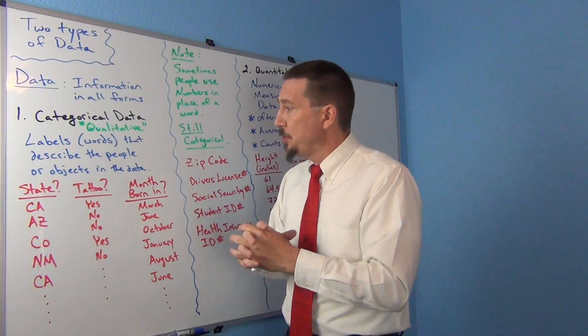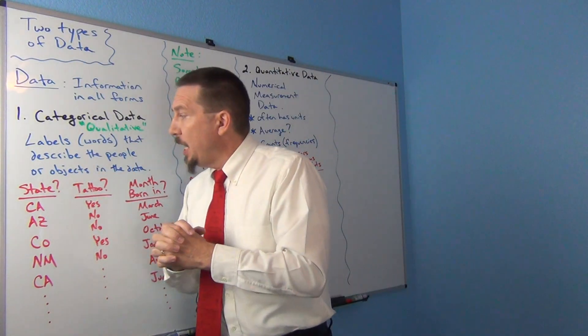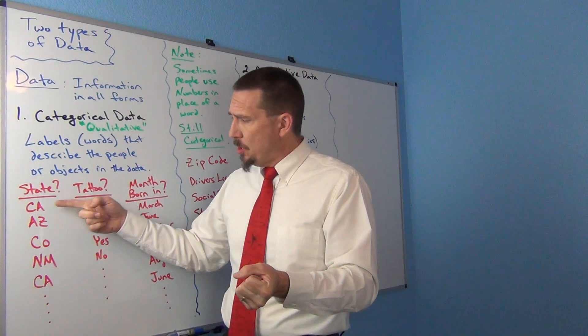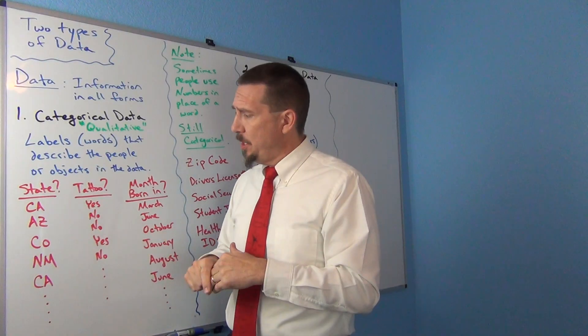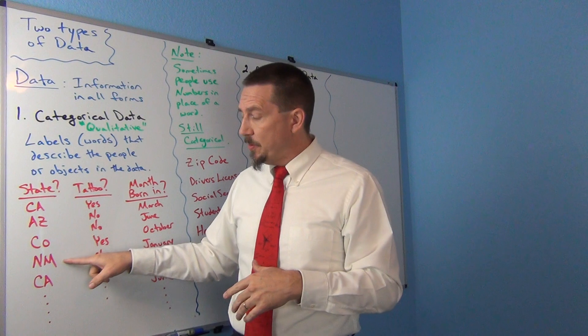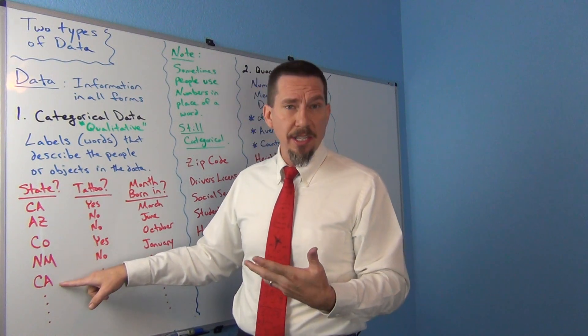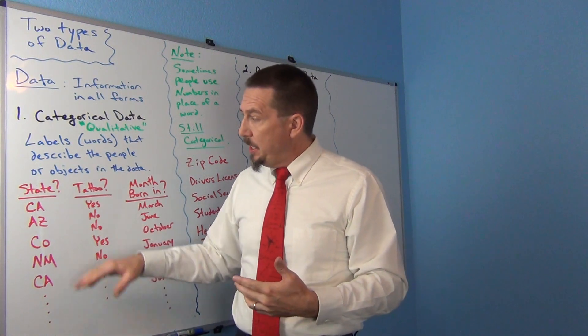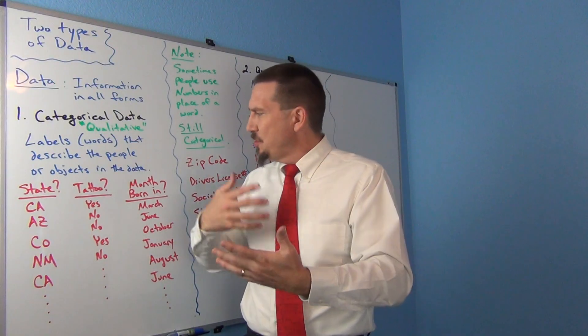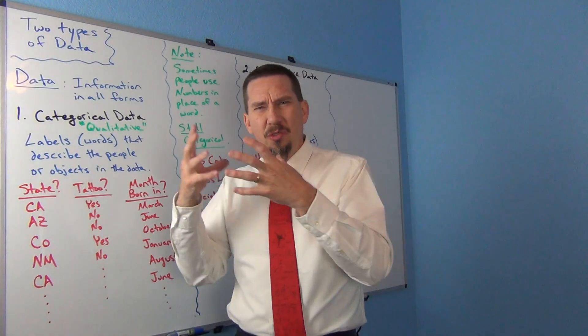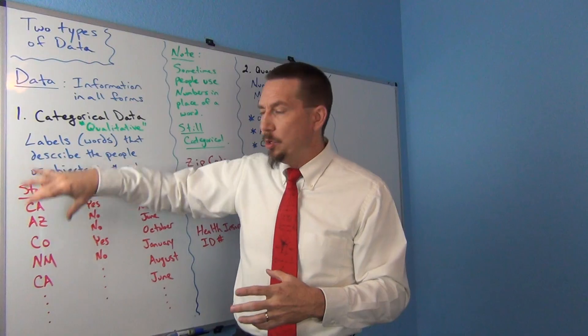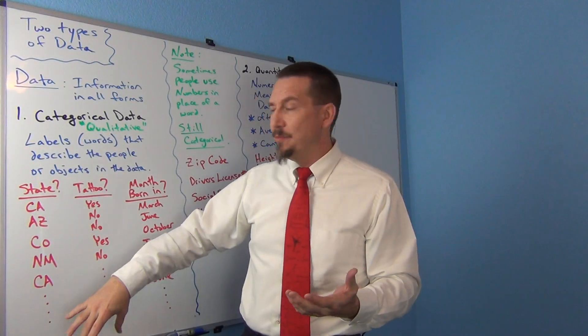Now categorical data is labels or words that describe people or objects in the data. Think of it as the column of data you're looking at is all made up of words. So let's look at some examples. If I ask people in the U.S. what state are you from? And somebody says, oh, I'm from California. And another person says, I'm from Arizona. And I'm from Colorado. And this one says I'm from New Mexico. And another person said they're from Colorado.